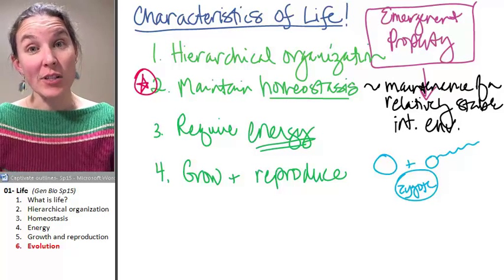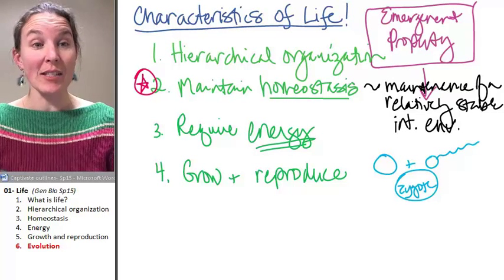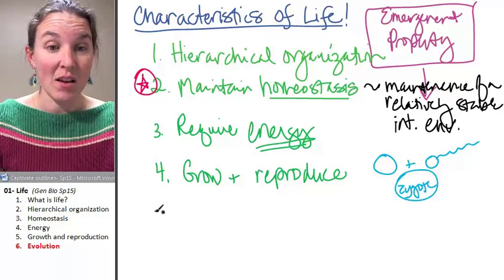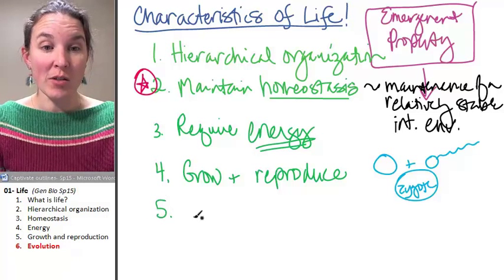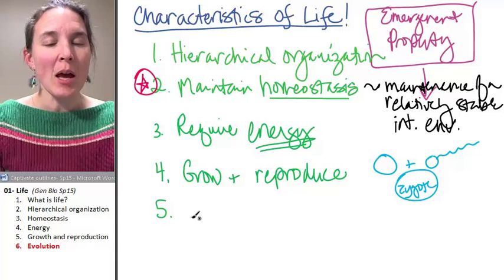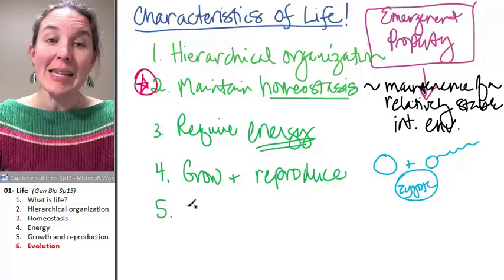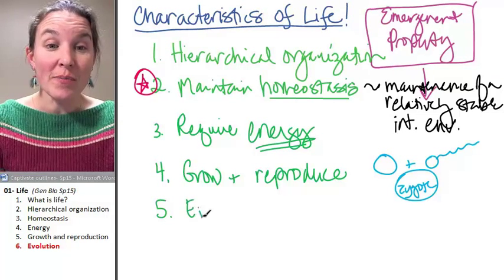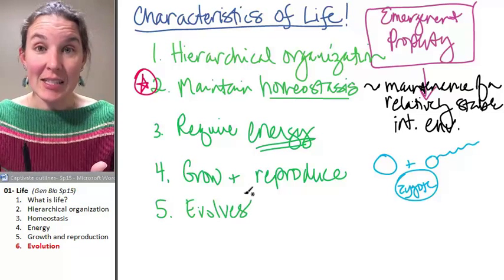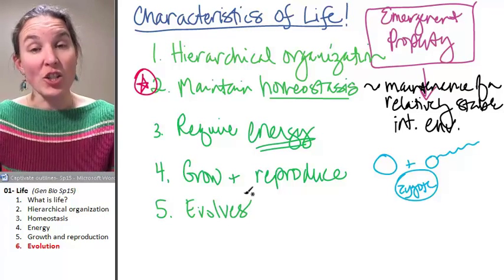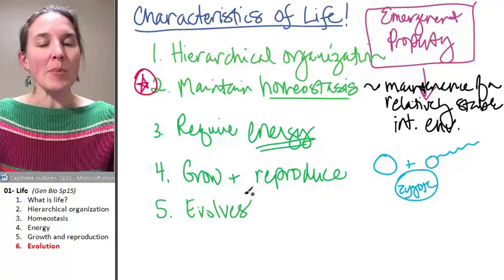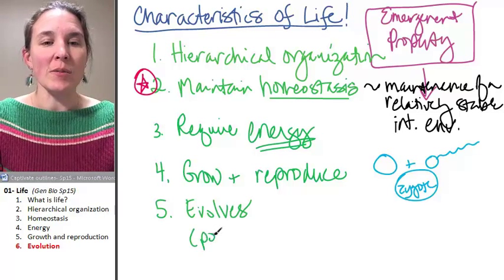The last characteristic of living systems that we're going to talk about is this. We have to make sure that we're talking about the biological definition of this. Life evolves — living systems evolve. They change over time. Now, this happens at the population level.